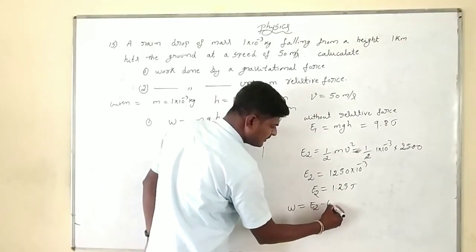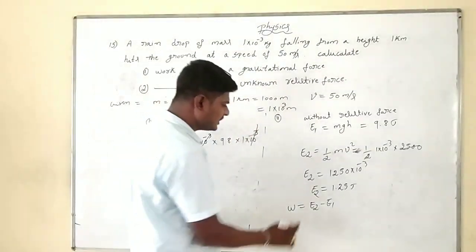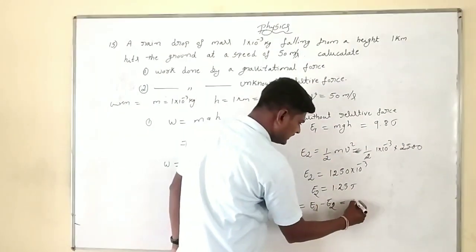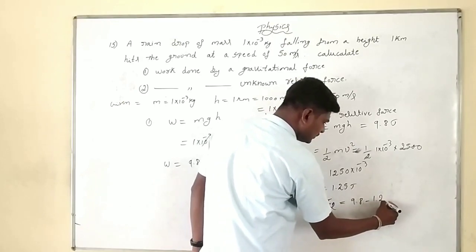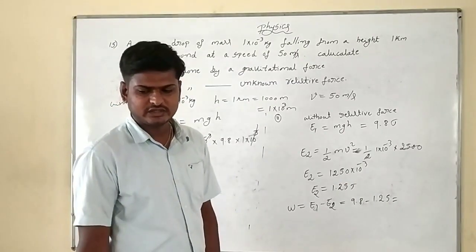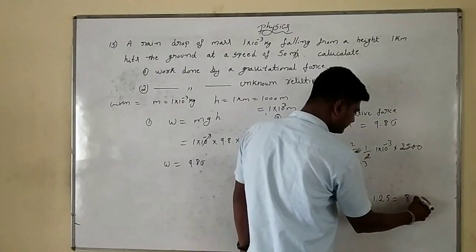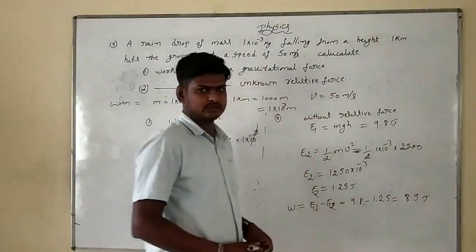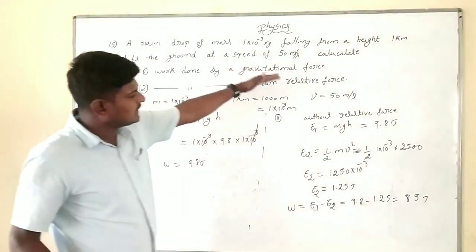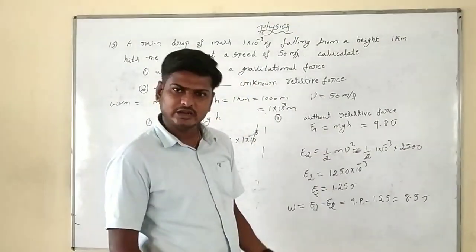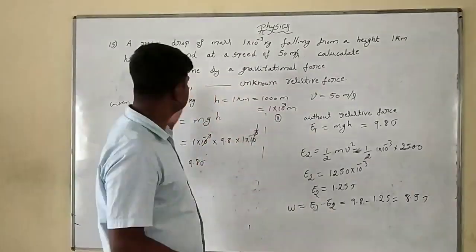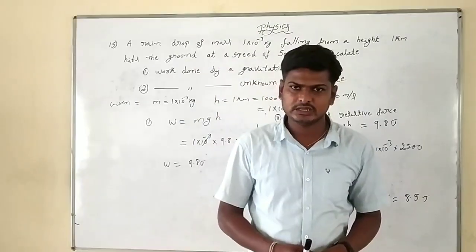Work done by the resistive force equals change in kinetic energy: E₂ minus E₁. That is 1.25 minus 9.8 joules, so 9.8 minus 1.25 equals 8.5 joules. Work done by gravity using mgh, work done by unknown resistive force using change in kinetic energy. This is problem 15. Clear?